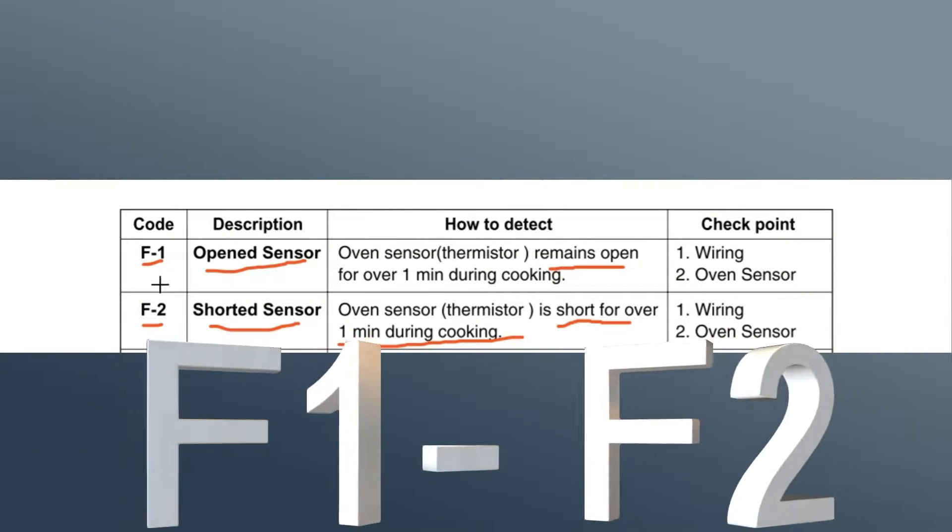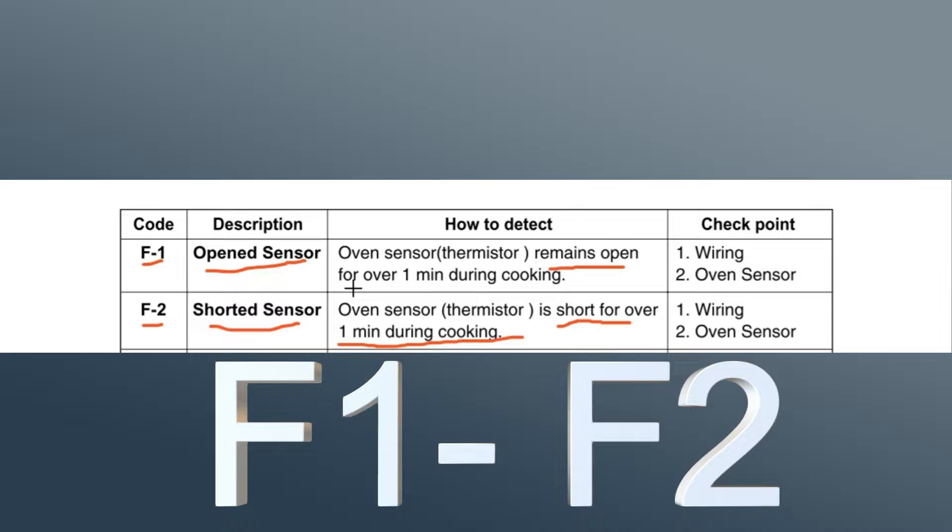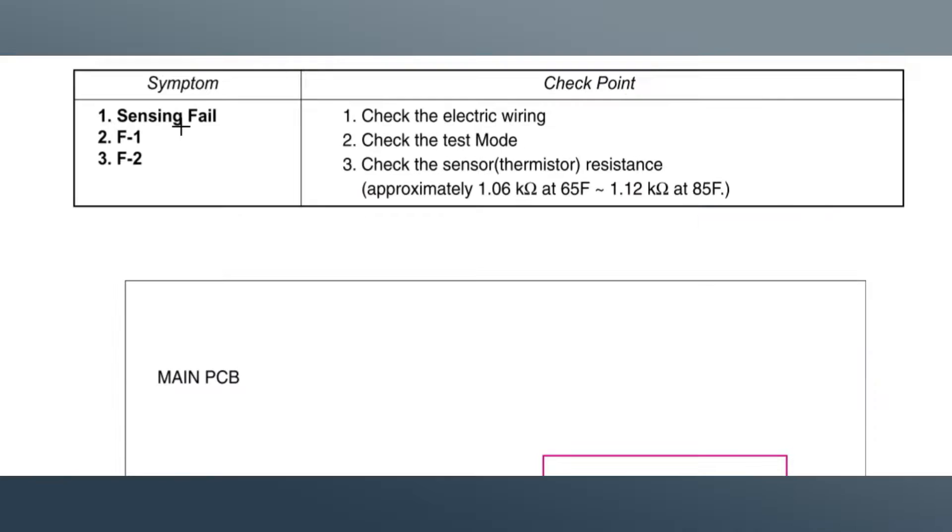So if you get one of these codes, we'll have to check the main control board and the sensor itself by checking the wiring and the oven sensor. Right here we have the F1 and F2 and it says here to check the wiring. We're going to check the test mode, which checks the main control board to make sure it's reading the thermistor correctly. This is the room temperature range, it should be 1.06 to 1.12 k ohms, which k ohm means a thousand. So one k ohm is a thousand ohms.